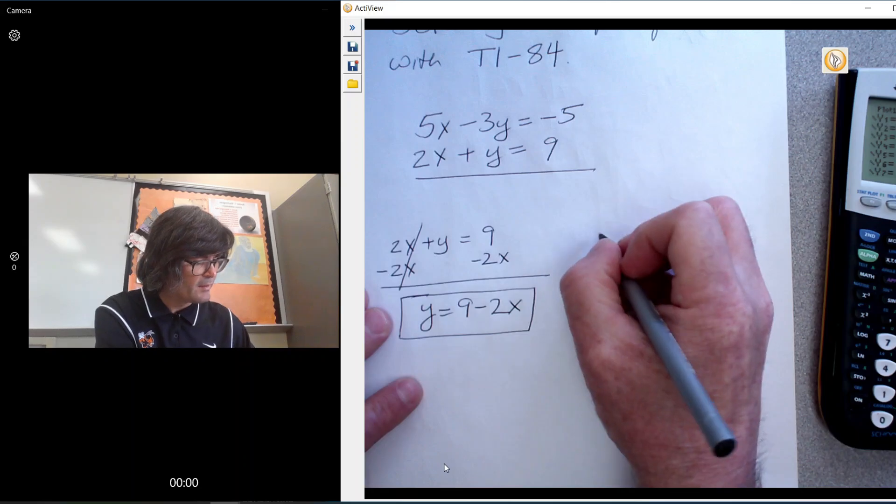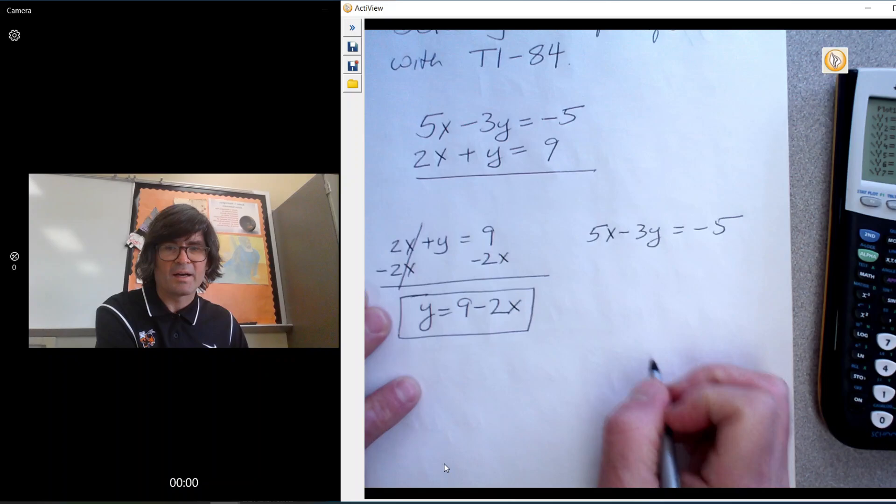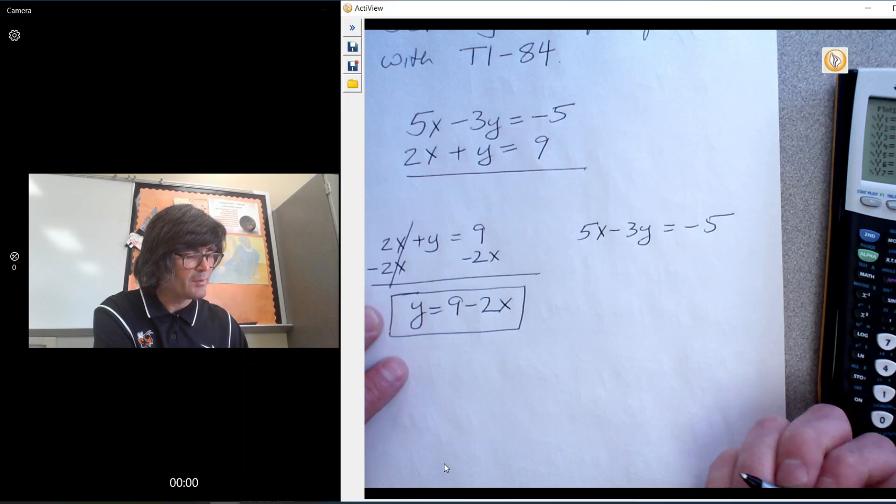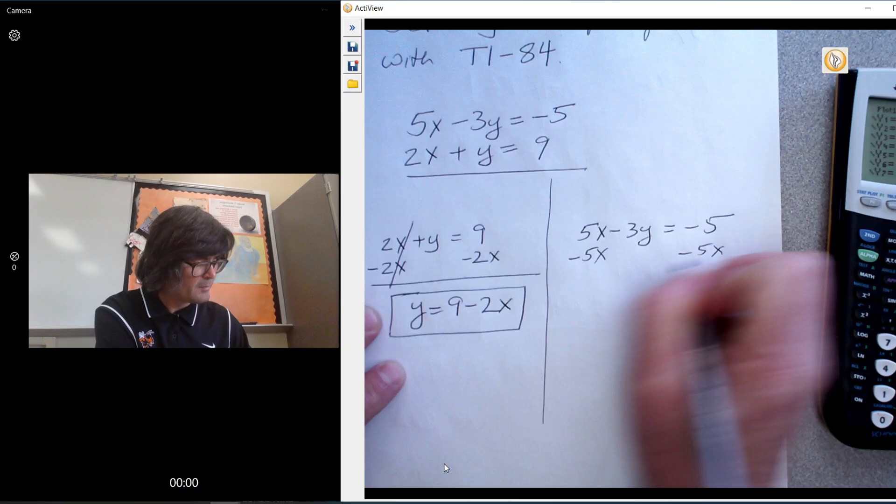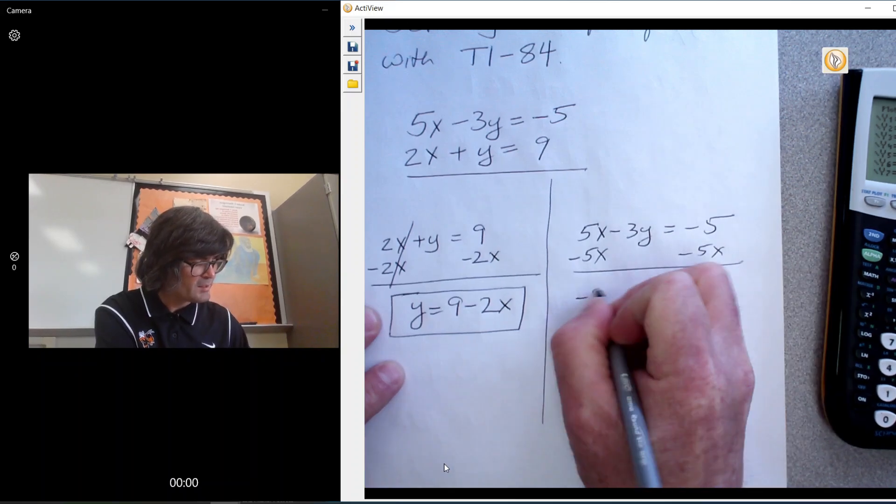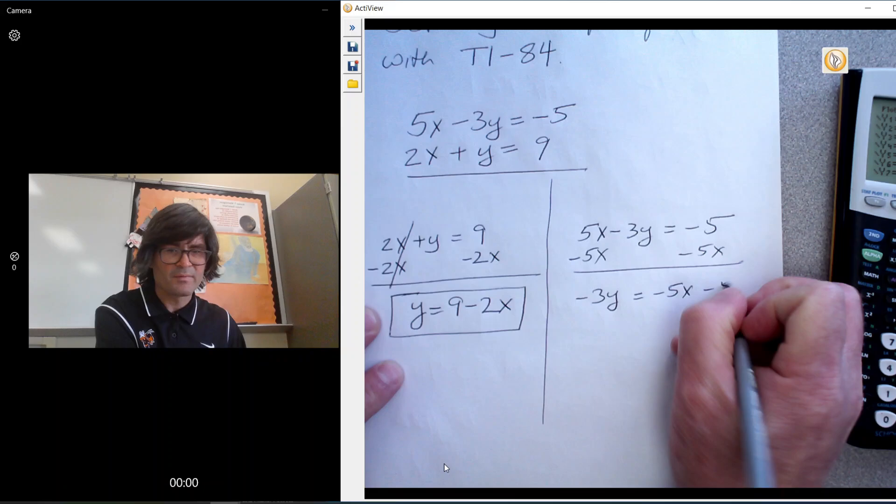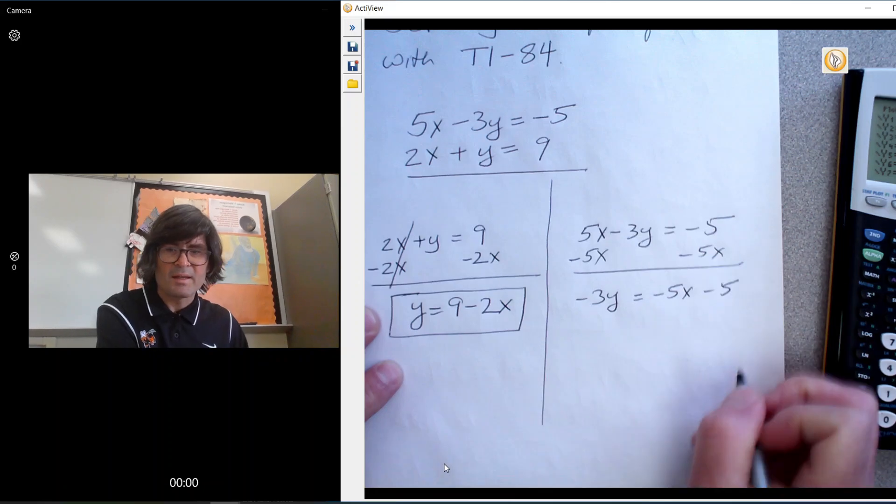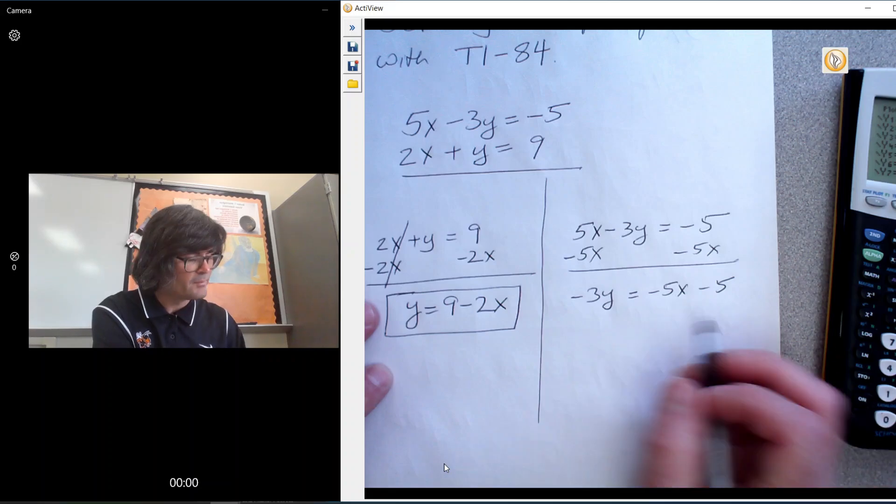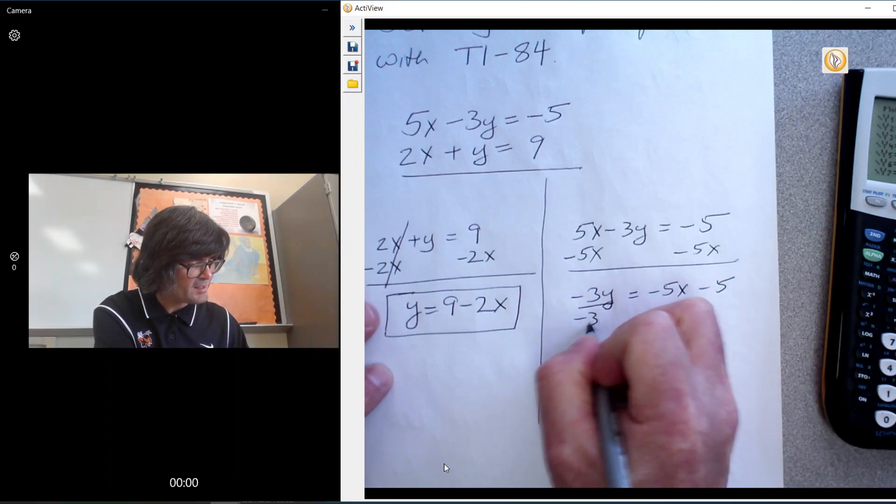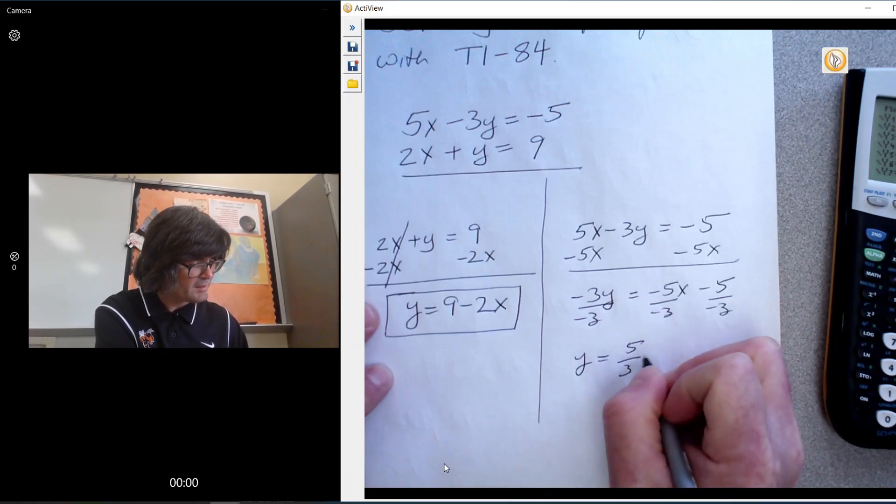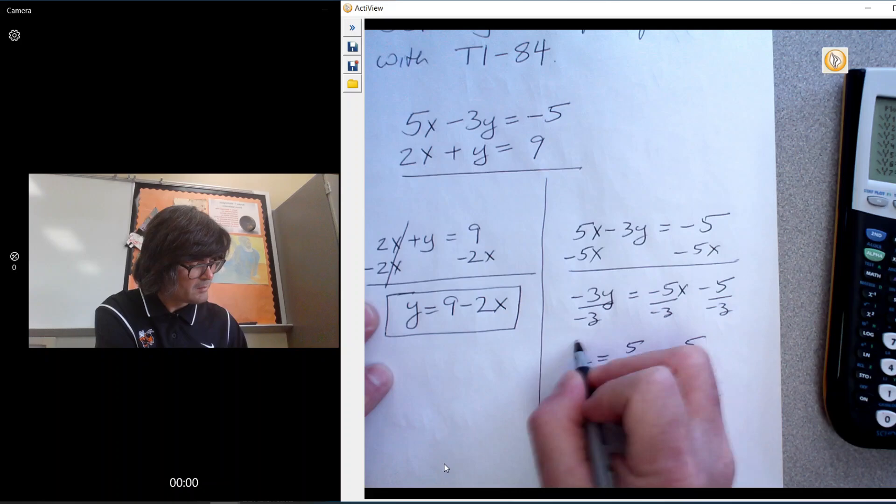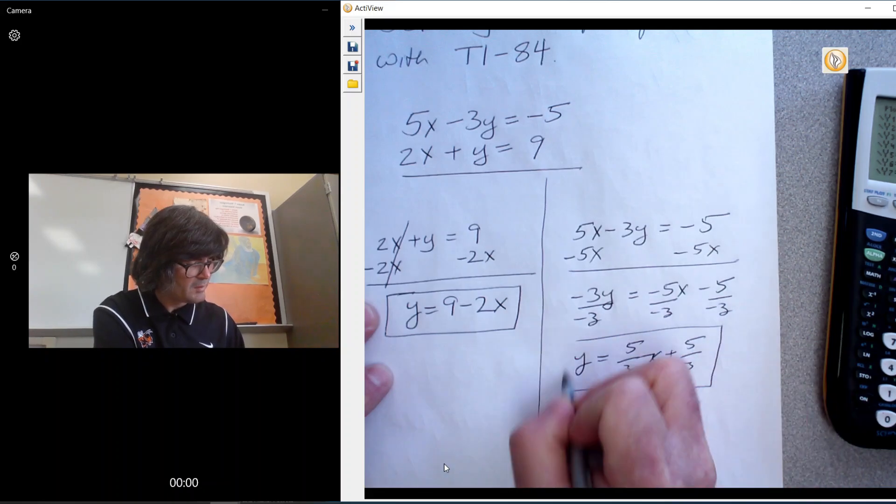The other one is 5x minus 3y equals negative 5. To get the y by itself, it's an extra step. We're going to take away 5x from both sides. You get minus 3y equals minus 5x minus 5. Then we divide by negative 3 to get y by itself. Divide everything by negative 3. Y equals 5 thirds x plus 5 thirds.